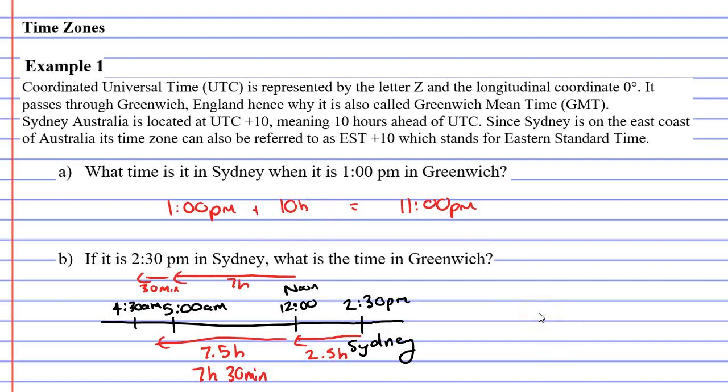So if it's 2:30 pm in Sydney, it's going to be 4:30 am in Greenwich. So you would look at that and say, all right, it's not really a good time to call someone.